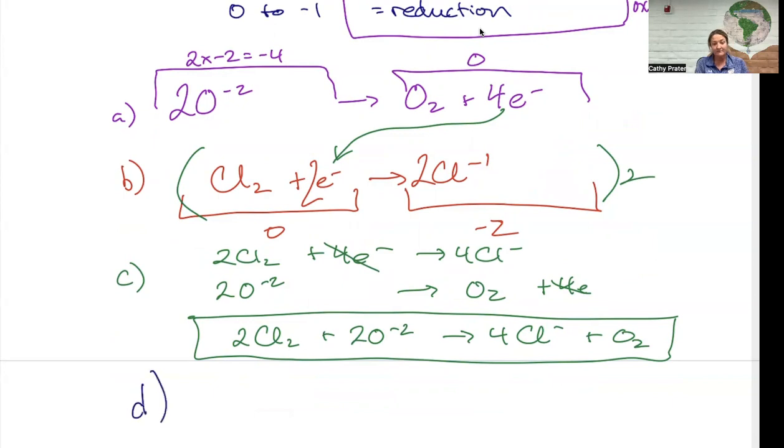For D, how many moles of electrons were transferred in the balanced reaction? It's whatever the least common denominator is between this number and that number. How many electrons canceled out? Four. I have a couple for you to try. It looks like my screen froze as I was writing N equals 4.